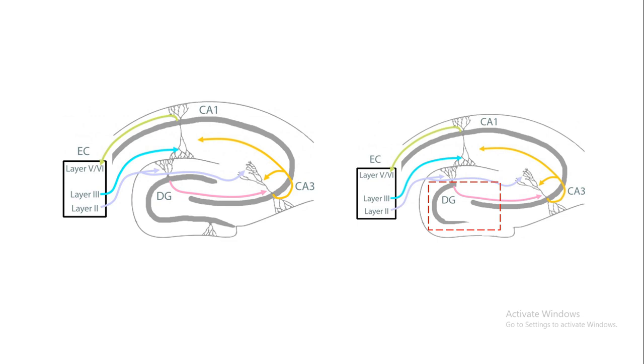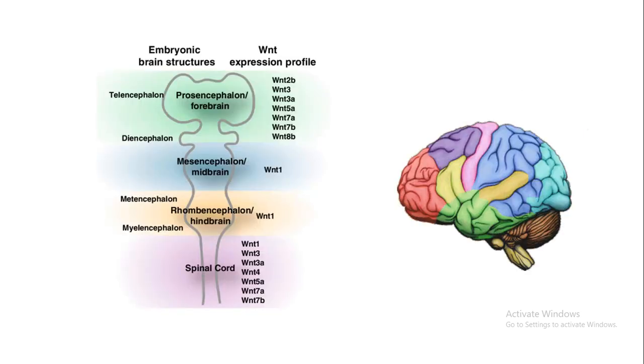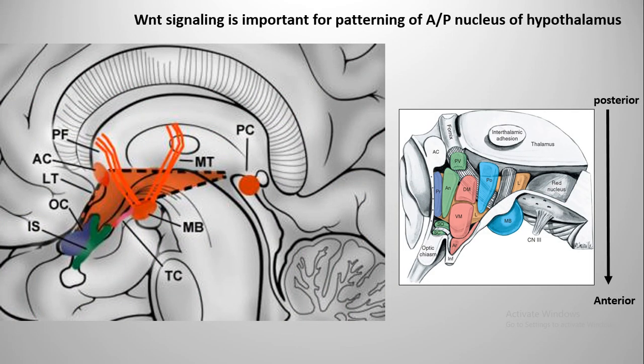Not only that, WNT signaling helps in differentiation of neurons. Whenever in a cultured stem cell population WNT signaling is activated forcefully, those neuronal stem cells become differentiated neurons. So WNT signaling can also help in differentiation of neurons. WNT family molecules have been seen in several structures of the embryonic brain, and it is quite evident after decades of research that WNT signaling is important for patterning of several aspects of the cortex, thalamus, and hypothalamus.